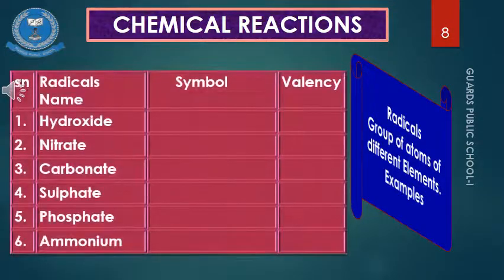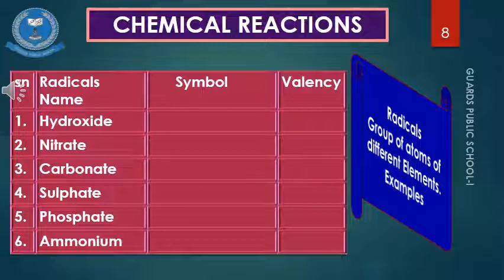Now we look at radicals formed from different elements. In this table, the six common radicals are: hydroxide, nitrate, carbonate, sulfate, phosphate, and ammonium. There are many other radicals, but we focus on these six because they commonly take part in reactions in the chapter on chemical reactions. These are the basics of radicals we need to understand.